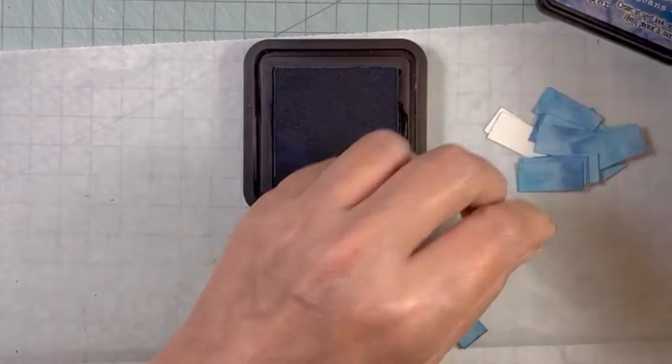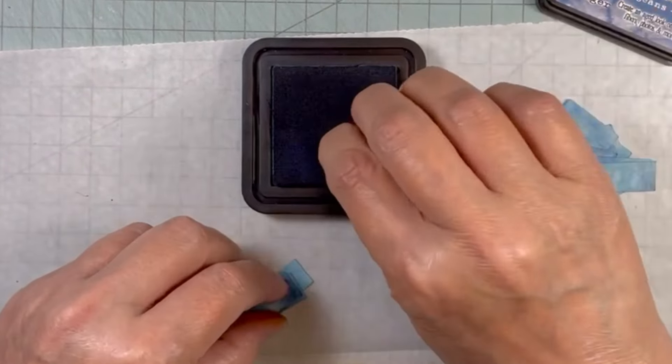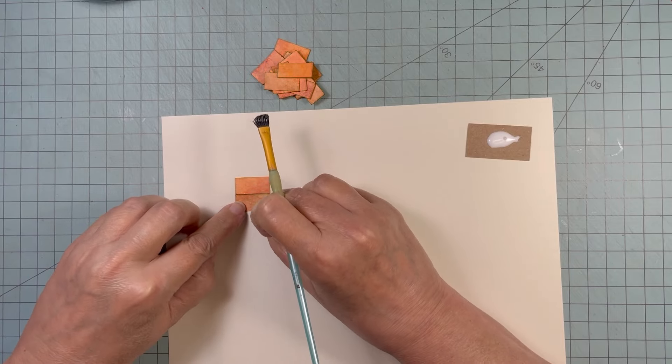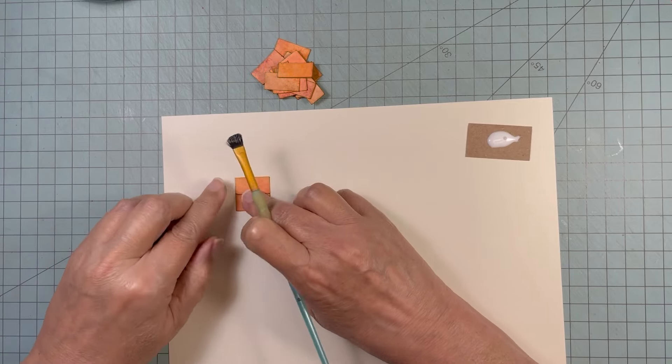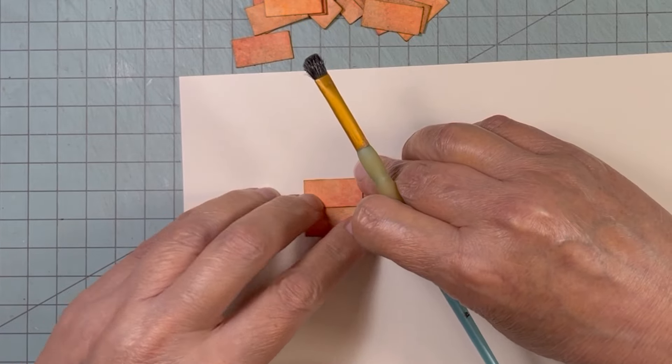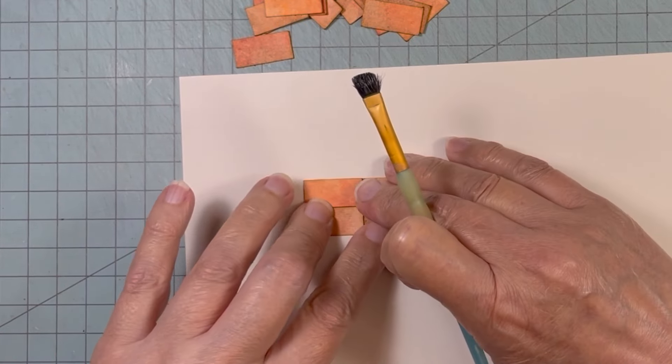I thought for each one that I should glue down a little section of each to give me an idea of how they look grouped together. So this first one is the terracotta color tiles. And I did ink the edges of these.